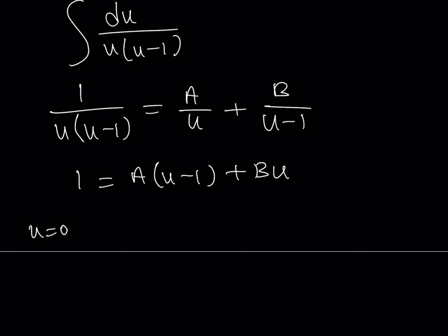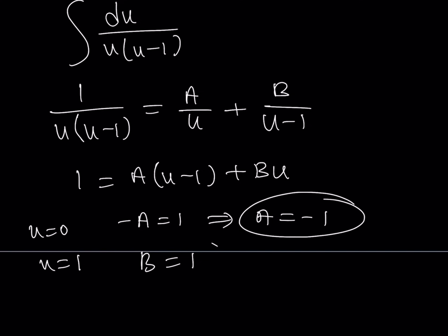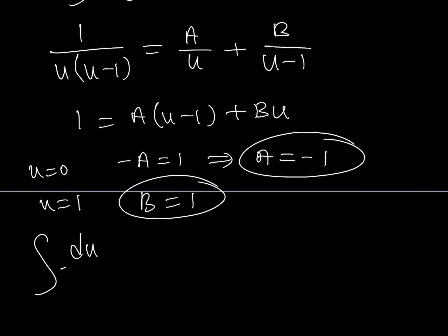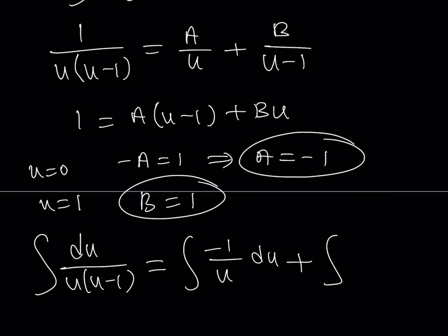Using the shortcut, I replace u with 0 on both sides: the B term cancels and I get negative A equals 1, so A equals negative 1. Replacing u with 1 gives B equals 1. With A and B found, the integral du over u(u minus 1) can be written as negative 1 over u du plus 1 over (u minus 1) du.